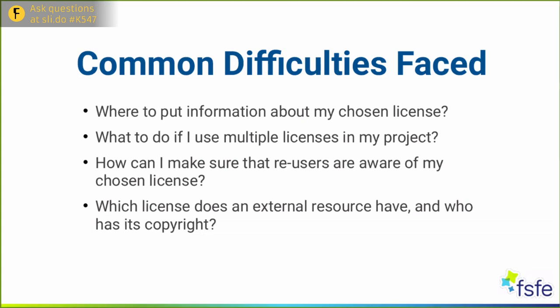The next problem is what you should do if you have multiple licenses in your project. For example, let's say you've decided to place your code under the GPL-3 license, but you also have some documentation licensed under a Creative Commons license. So now in your project there are two licenses — how should you convey this information in your repo? Should you now have two license files?